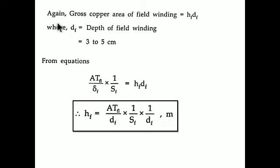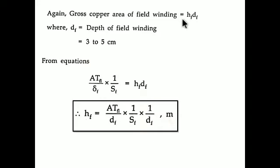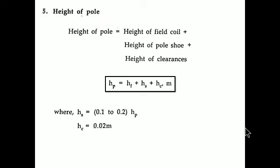There is another method to find the gross copper area: it equals the height of the field coil hf multiplied by the depth of the field. The depth of the field is approximately 3 to 5 centimeters. By equating these two expressions for gross copper area, we can solve for hf — the height of the field coil. Note that ATfl used here is the full load field MMF calculated in the previous procedure.